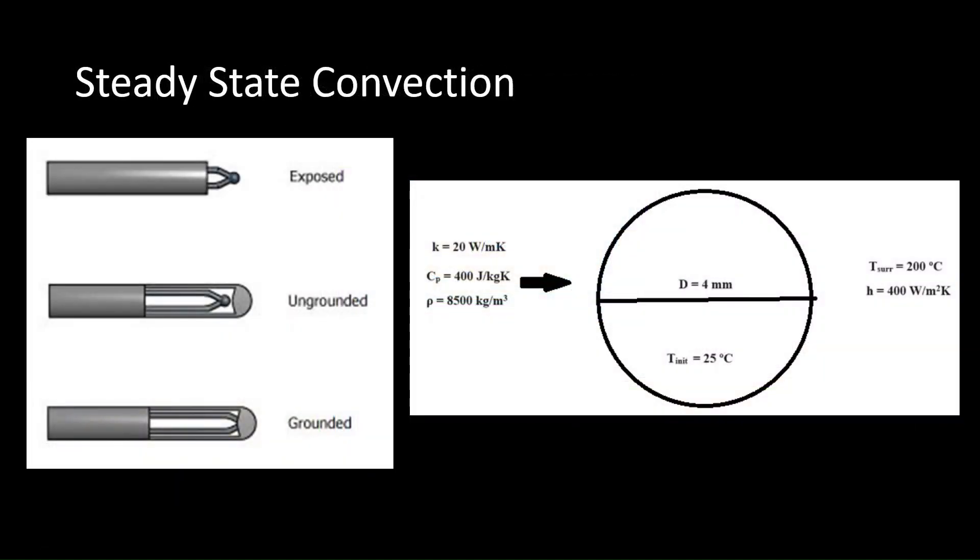Oftentimes, we want to determine how temperature profiles converge to a steady state. For the last simulation, we model a thermocouple junction, recording the temperature of a gas stream, which is known to be 200 degrees Celsius. The geometry of the exposed thermocouple junctions can be approximated as a sphere. This sphere starts at room temperature, has a 4 mm diameter, and the gas stream has the fluid properties highlighted.